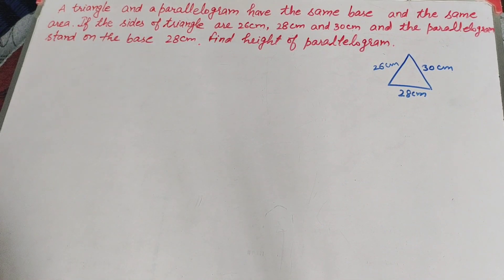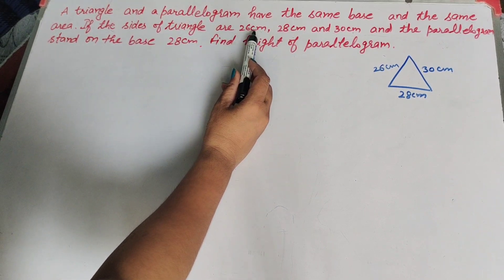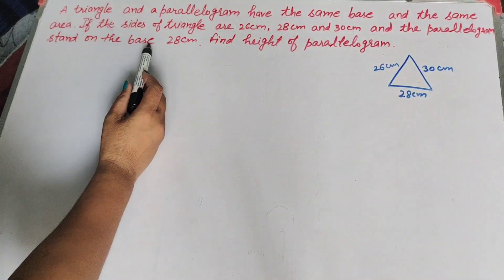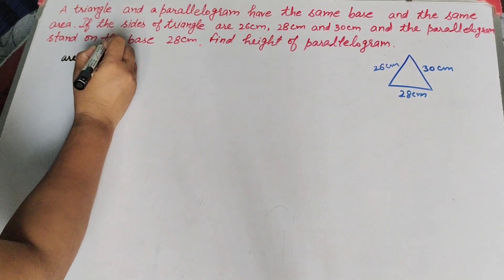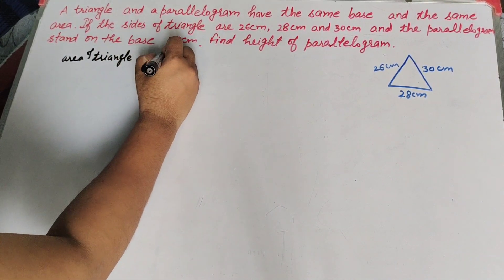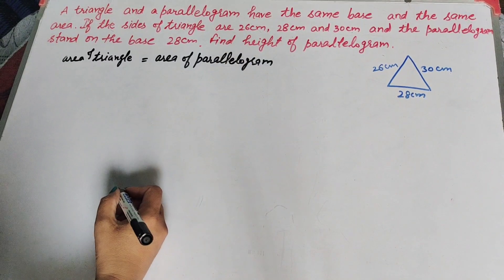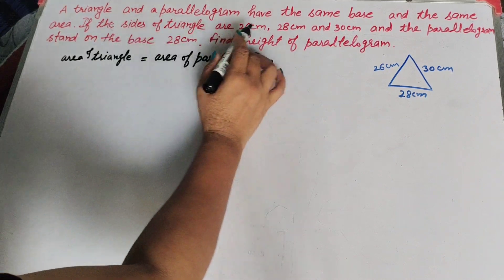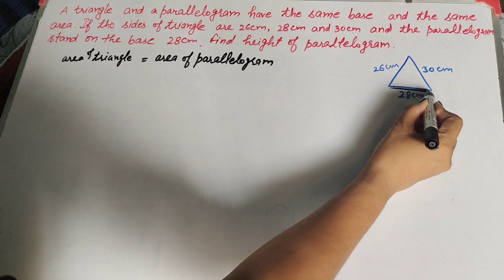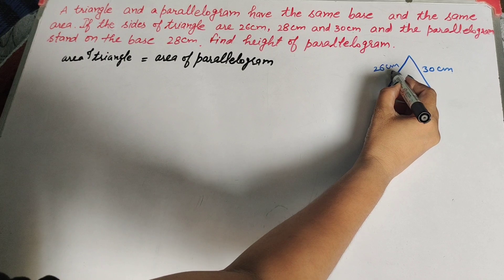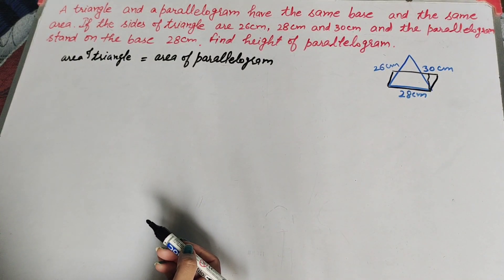Hello friends, welcome to my channel. In this video we discuss a triangle and a parallelogram that have the same base and the same area. The sides of the triangle are 26 cm, 28 cm, and 30 cm, and the parallelogram stands on the base of 28 cm. We need to find the height of the parallelogram. Given: area of triangle equals area of parallelogram.